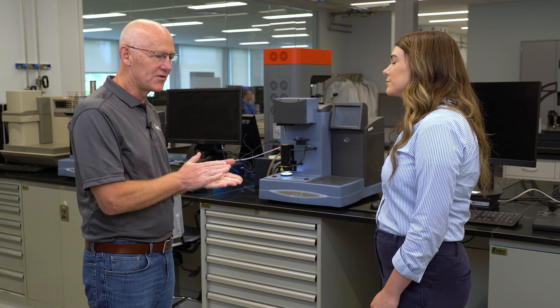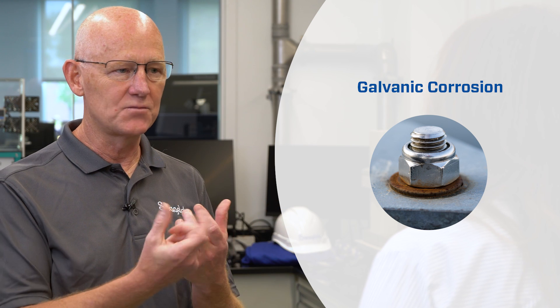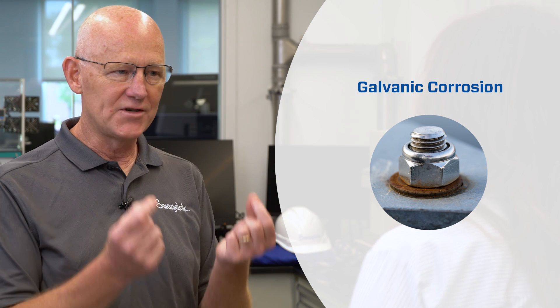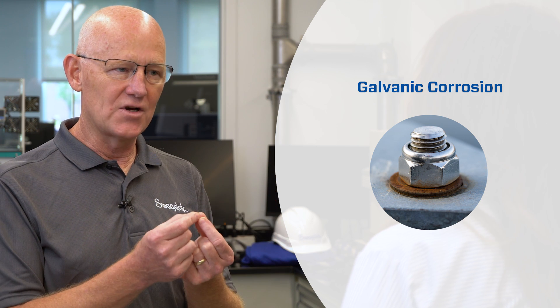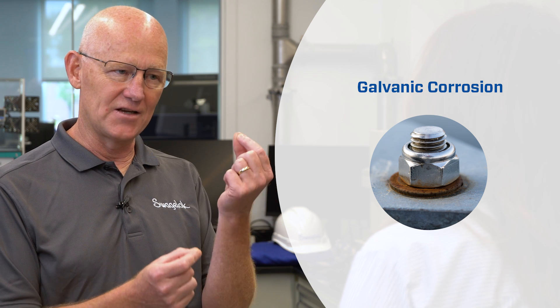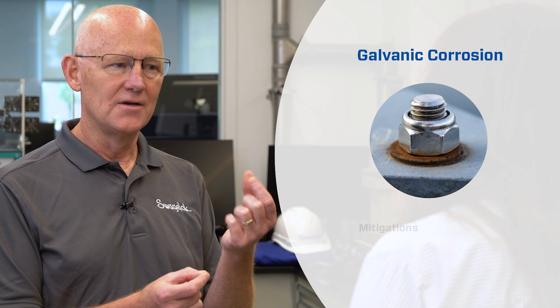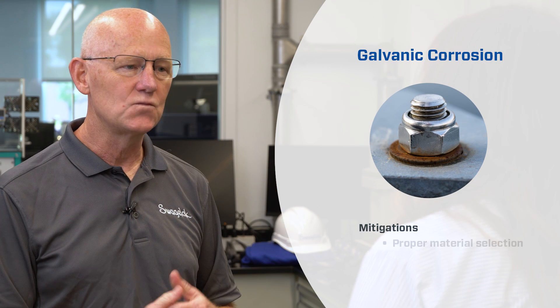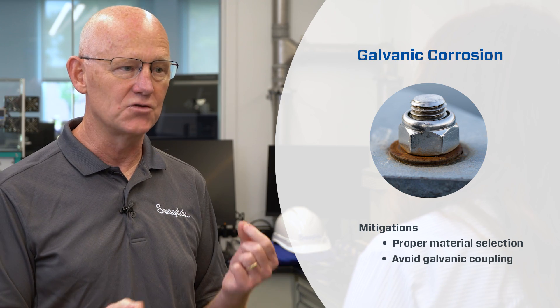Another type of common corrosion in offshore is galvanic corrosion. This happens when you take two dissimilar metals and you connect them, like a bolt holding a plate together, for example. If one material is more susceptible to corrosion than the other, when you couple them that way, you'll actually accelerate the corrosion in the more susceptible material. To mitigate this, you want to make good choices on material selection and avoid galvanic coupling that's too strong.